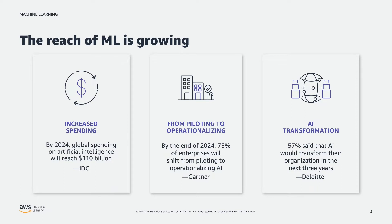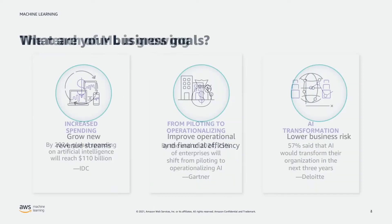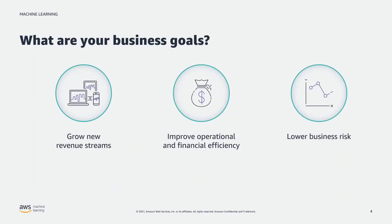Every time we talk about AI and machine learning from a business perspective, we have to start with the business goals. As leaders of an organization, those goals are usually around growing new revenue streams, driving cost and efficiency — taking cost out of your business and gaining efficiency — and lowering business risk. Operational efficiency is key and is usually where a lot of companies start their journey, looking at existing business processes and asking how they can make them more effective.